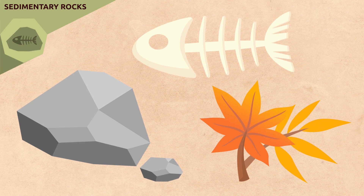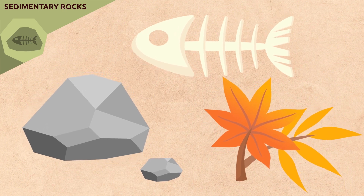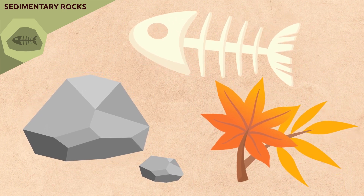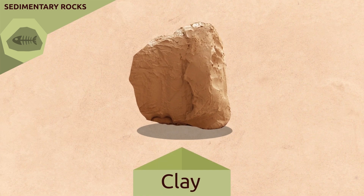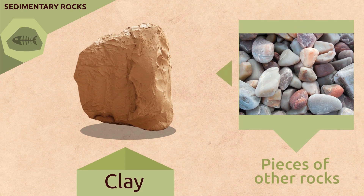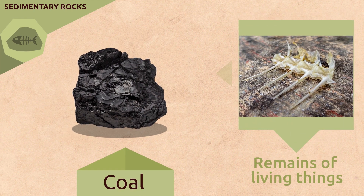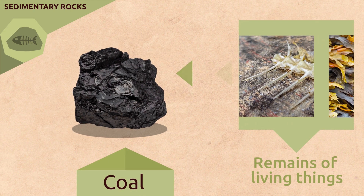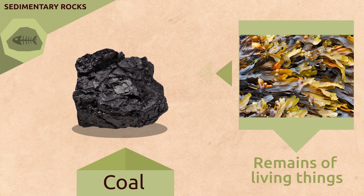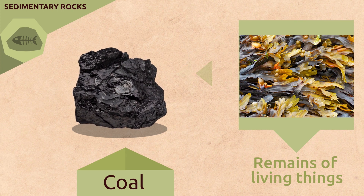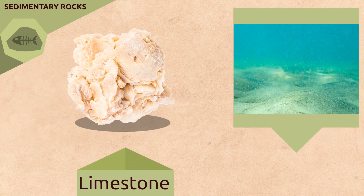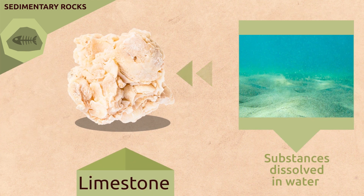Sedimentary rocks are formed from pieces of other rocks or even once-living organisms. Clay, for example, is formed by broken-up pieces of other rocks. Coal and petroleum are formed from the remains of living things like animals and plants, and from sediment deposits found in marine beds. Limestone is formed from substances dissolved in water.